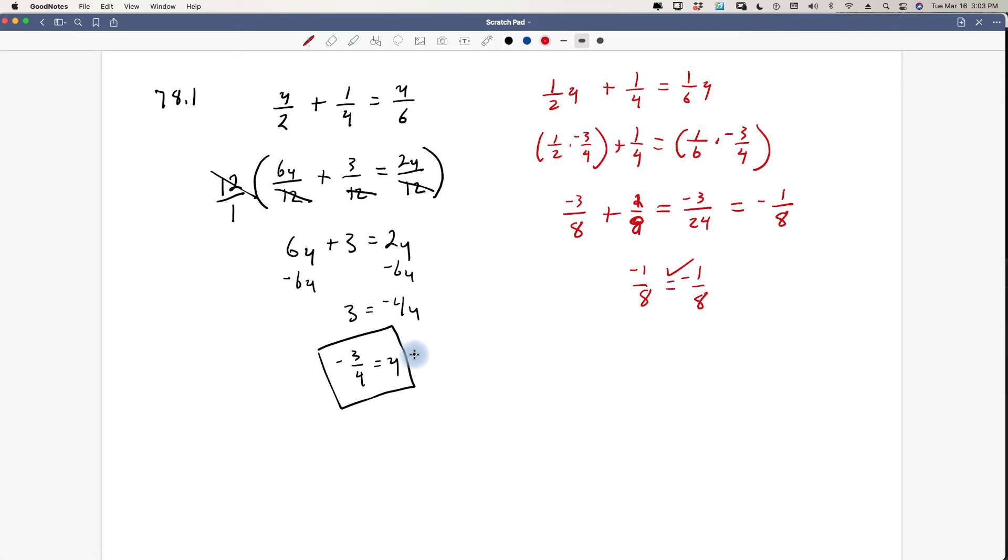So that checks out. So your answer over here is correct because we checked it and we got the same thing on one side as we did on the other. So everything is copacetic. Let's move on to 78.2.